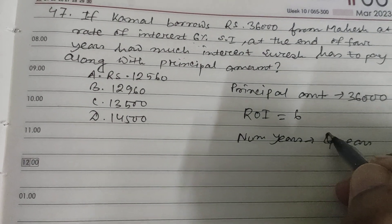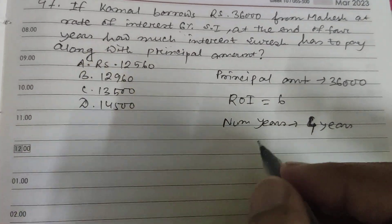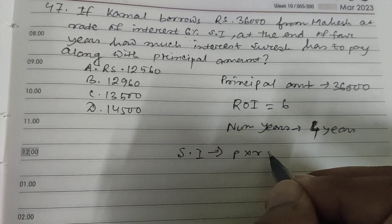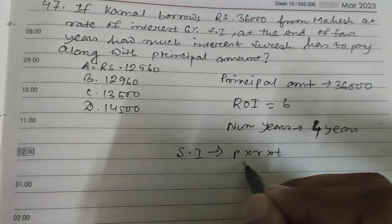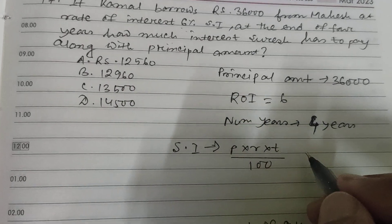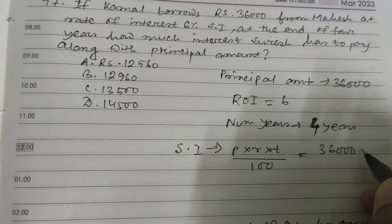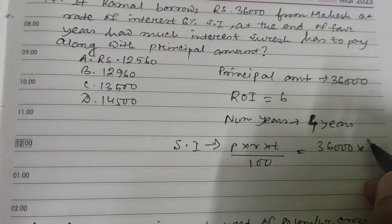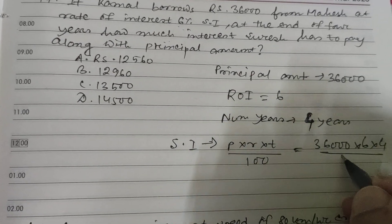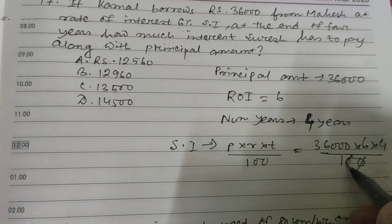Simple interest equals P into R into T divided by 100 — that means principal into rate of interest into time. So principal is 36,000, rate of interest is 6, and time is 4, divided by 100. Just calculate it.